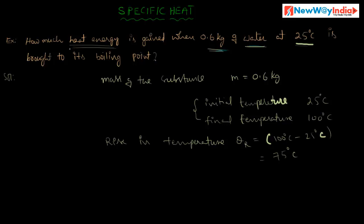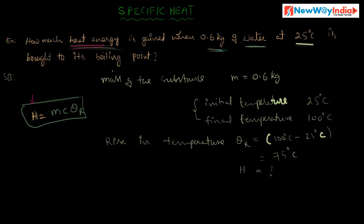We have to find the heat energy gained by water, that means we have to find H. The relation between heat energy, mass, and specific heat capacity is H is equal to M C theta R. Here H is heat energy gained, M is mass of the substance, and C is specific heat capacity of the substance, which is water.